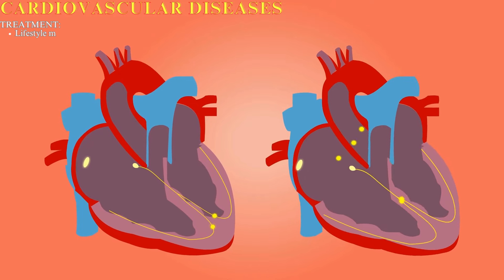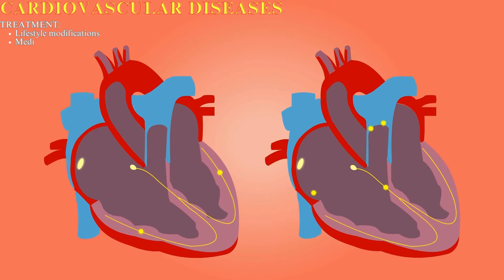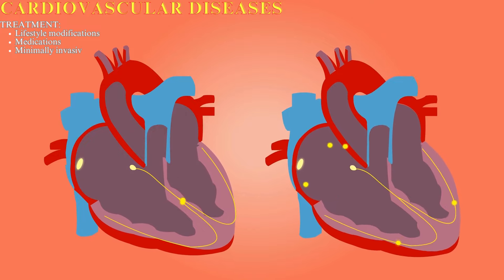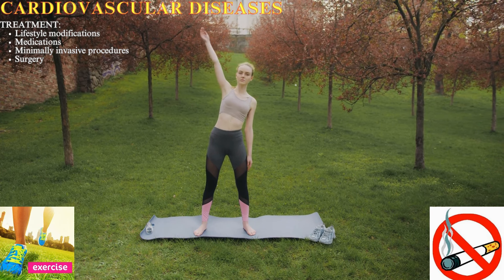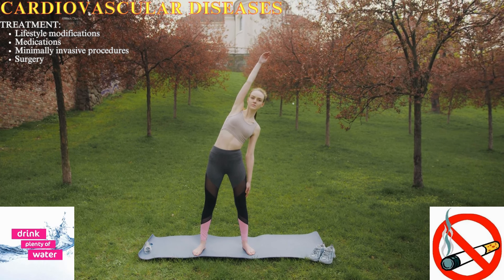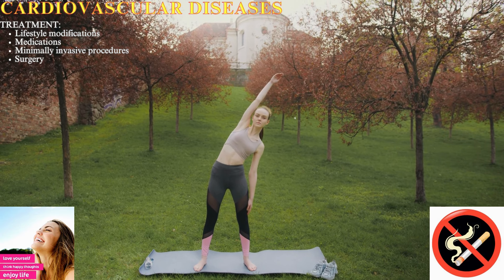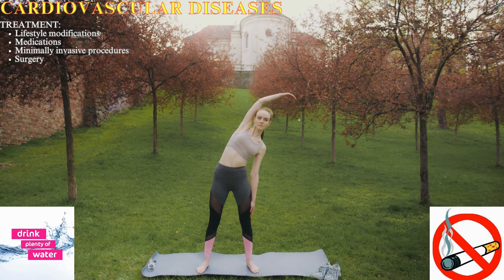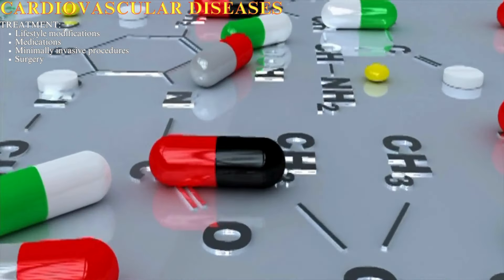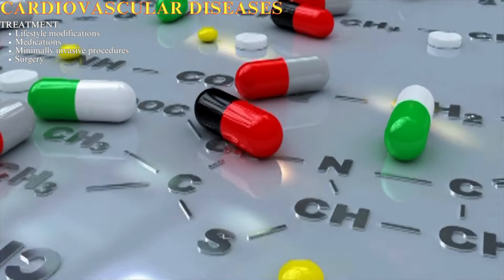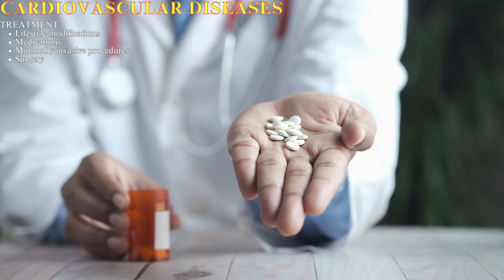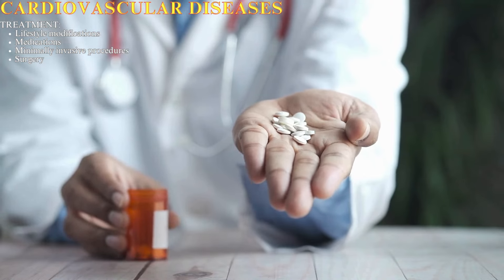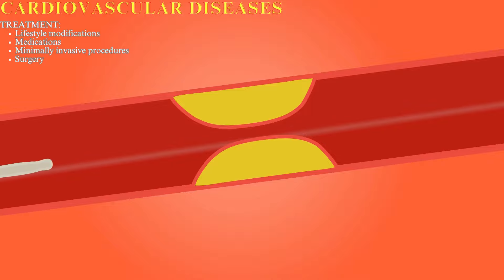The most suitable treatment for CVDs depends on the specific type and severity of the condition. Treatment approaches often involve a combination of strategies. Lifestyle modifications form the cornerstone of managing CVDs and include adopting a heart-healthy diet, regular physical activity, smoking cessation, and weight management. Various medications can help control blood pressure, cholesterol levels, and blood sugar, and can also prevent blood clots and regulate irregular heartbeats.